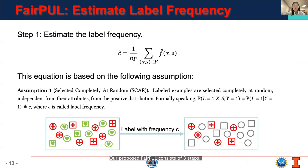Our proposed fair PUL consists of three steps. First, we estimate the labeled frequency according to the following equation, where F̂ is the trained predictor of the probability of whether a sample is labeled or not. We can see that this is actually an average estimator.